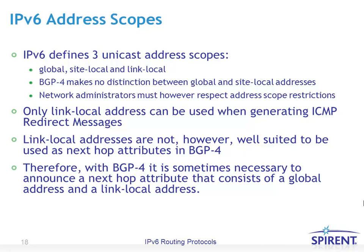As discussed in the IPv6 addressing architectural topics, there are three types of unicast address scopes: global, site-local, and link-local. BGP4 makes no distinction between global and site-local addresses, so it is up to network administrators to respect address scope restrictions — for example, not advertising a site-local address into the global internet. Another limitation is to only use link-local addresses when generating ICMP redirect messages. Link-local addresses are not well-suited as a next-hop attribute in BGP4, so it is sometimes necessary to announce a next-hop attribute consisting of both a global address and a link-local address.